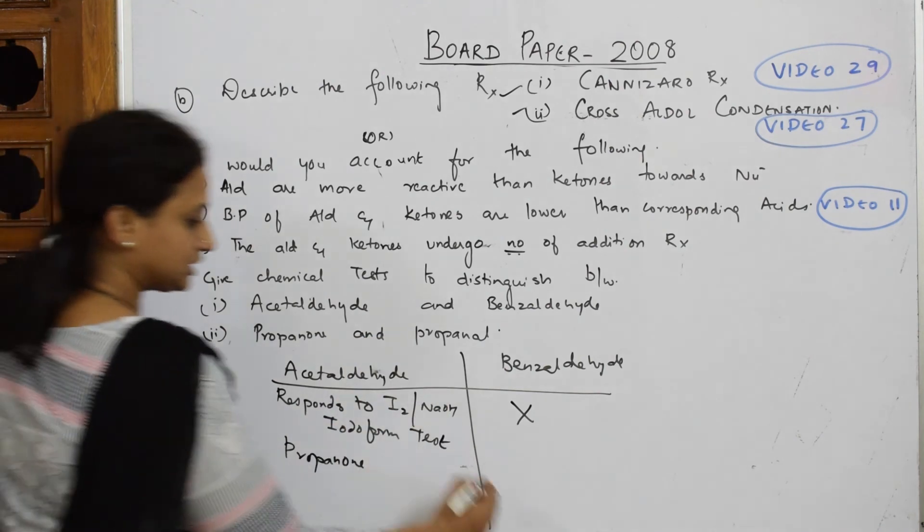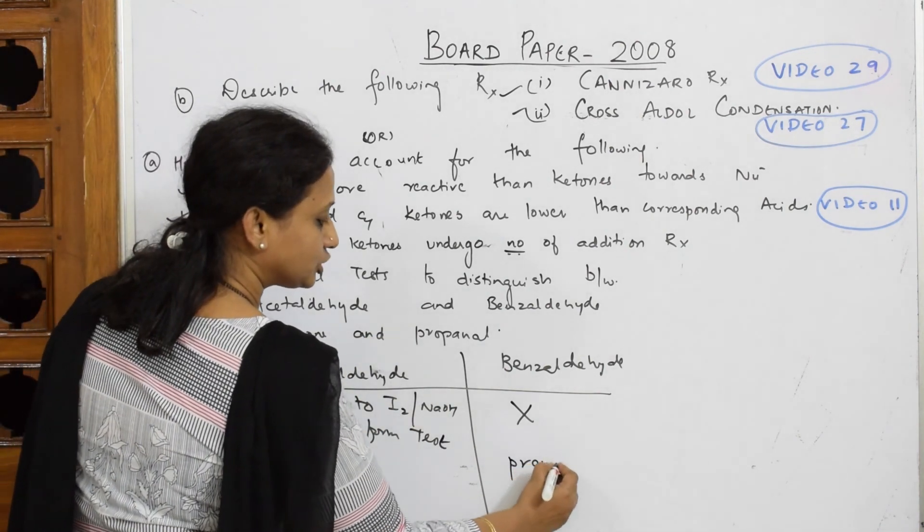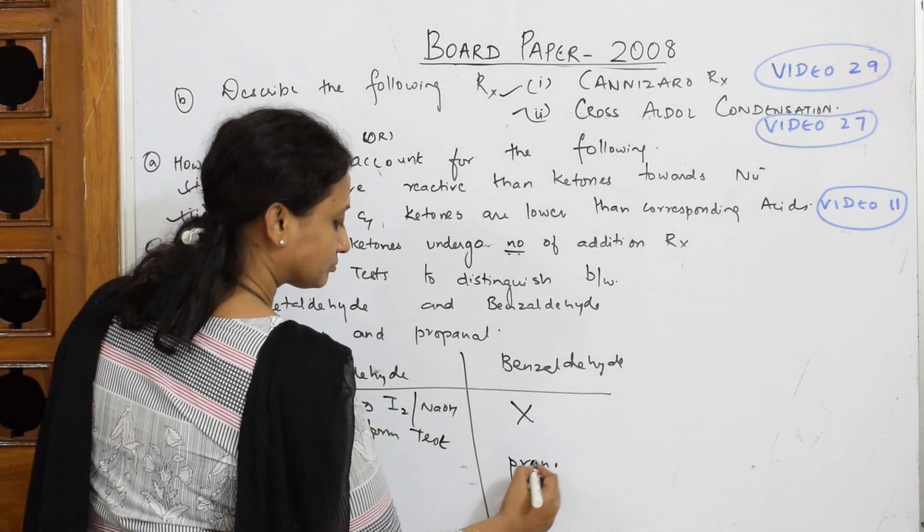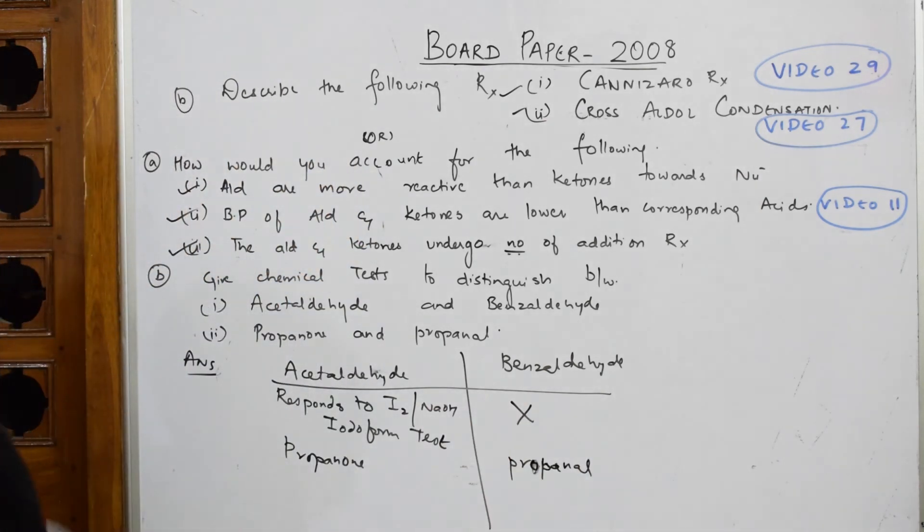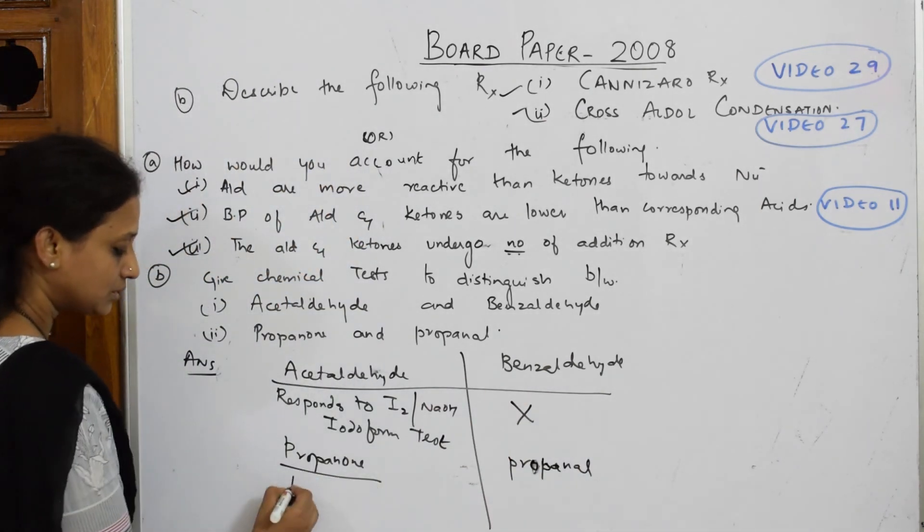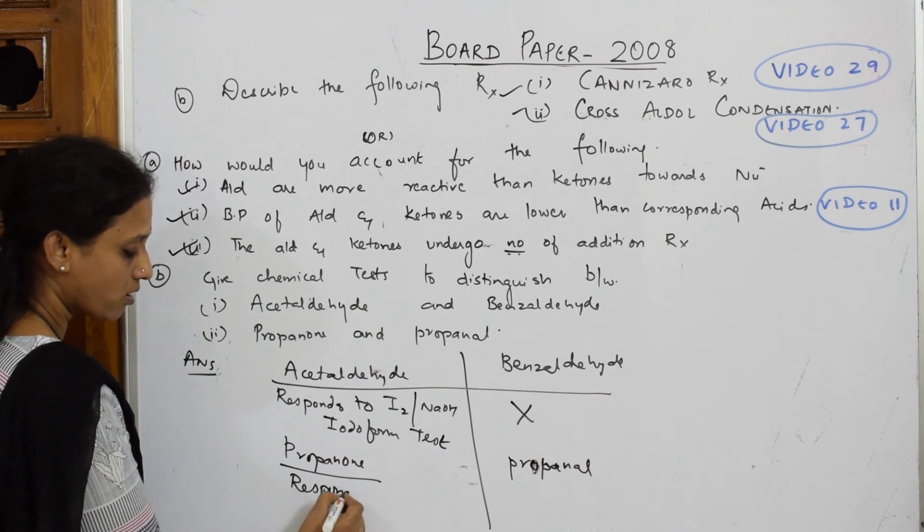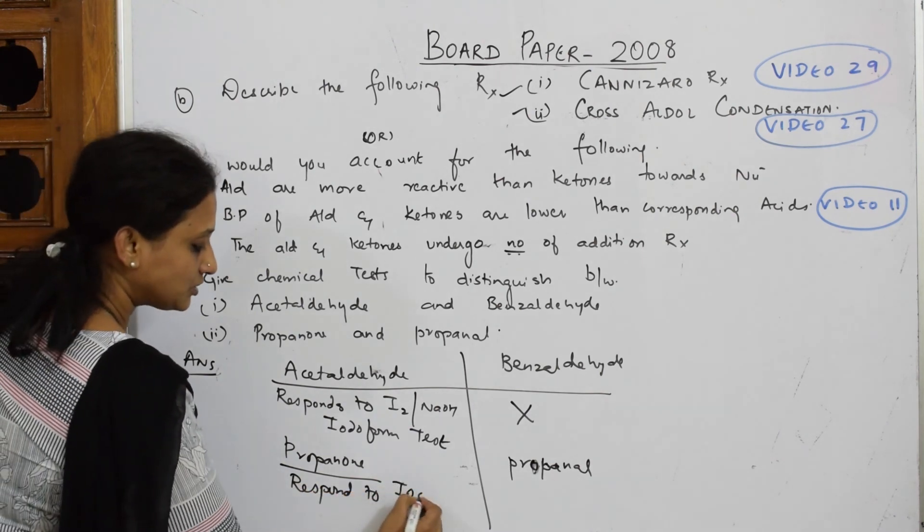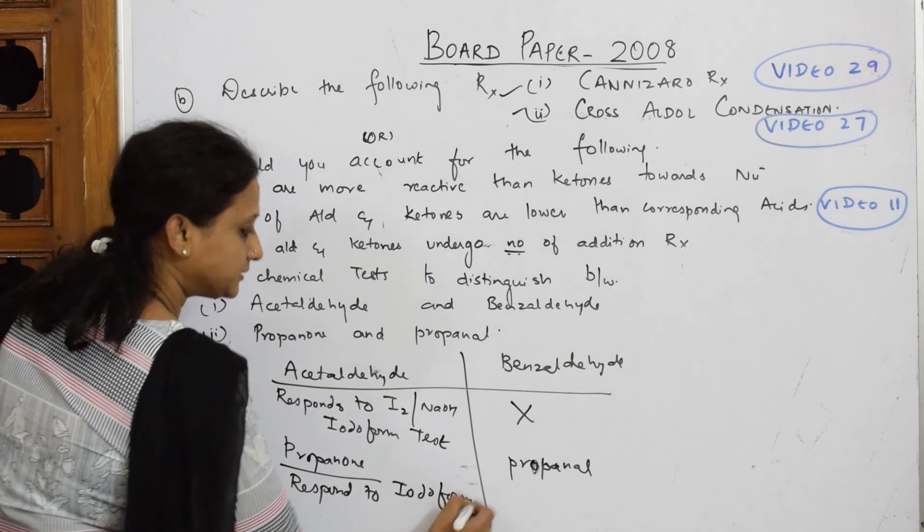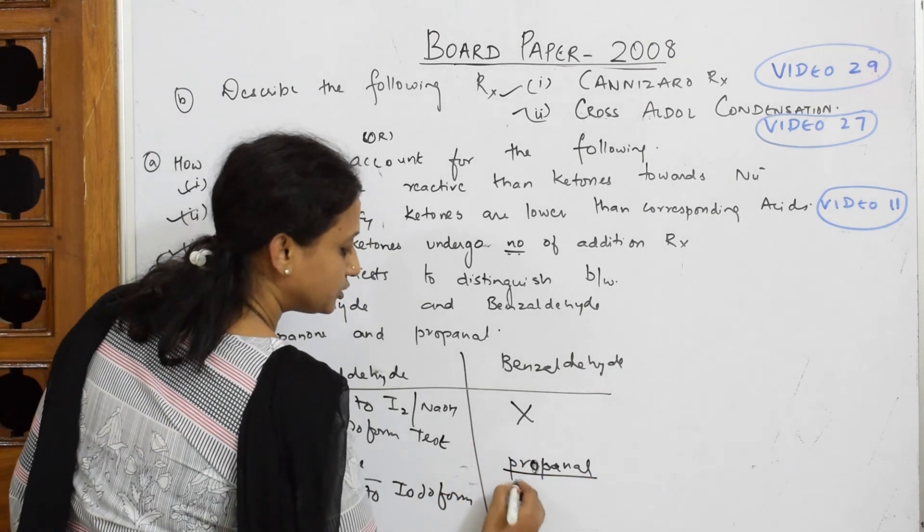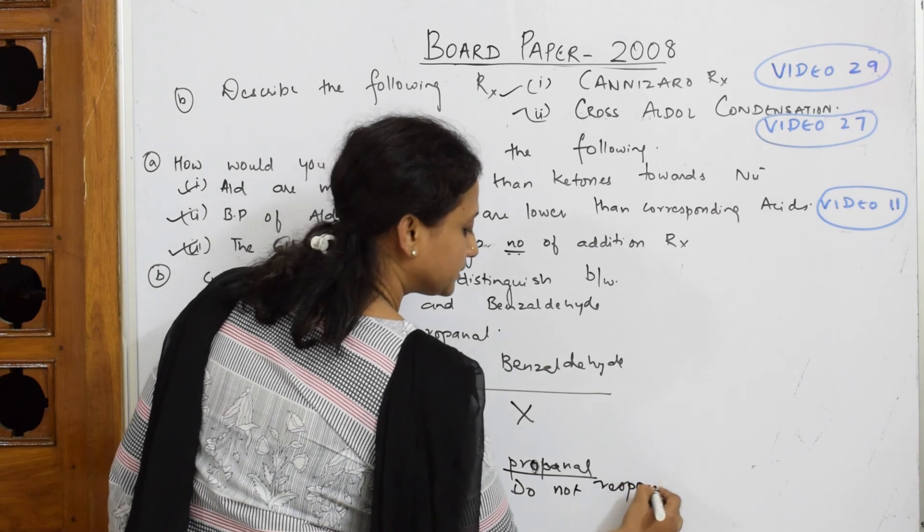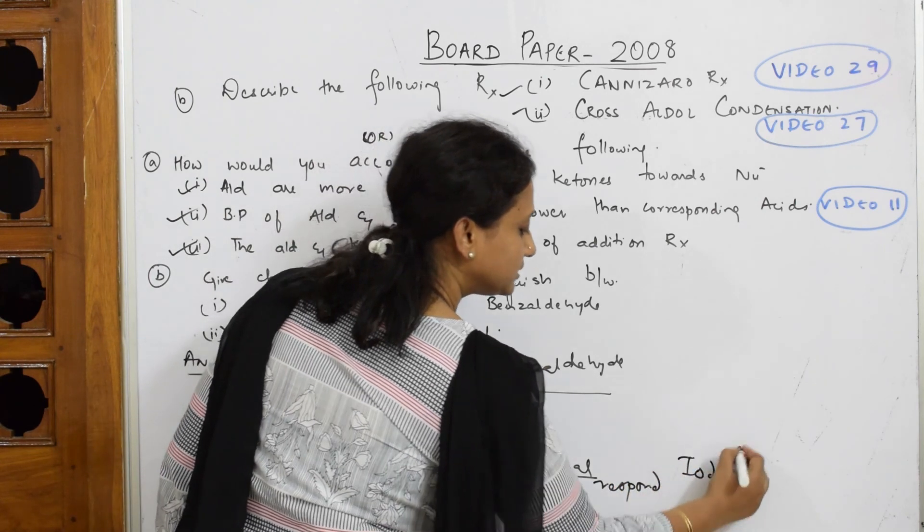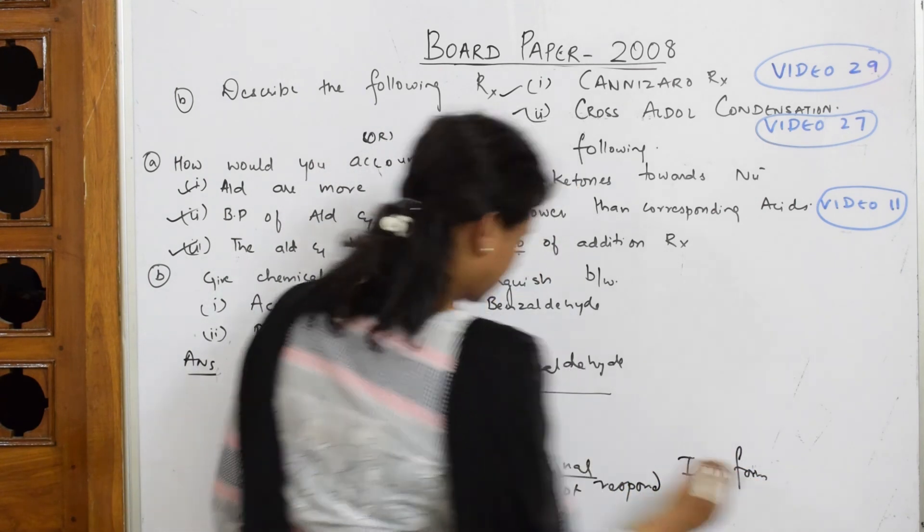Next, propanone - same, again it is a ketone and this is propanal. We very well know propanal. We very well know ketones respond to iodoform test and propanone did not respond to iodoform test.